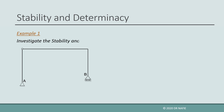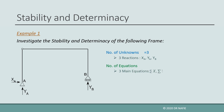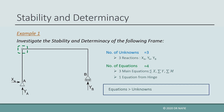Now let us solve some examples. The shown frame has two supports: one hinged support with two reactions and one roller support with one reaction, so the total number of reactions is 3. Because there are no closed frame loops, the number of internal unknowns is 0. Therefore, the total number of unknowns is 3. The total number of equilibrium equations is 4 — the three main equations plus one equation from the intermediate hinge. Because the number of equilibrium equations is larger than the number of unknowns, the structure is unstable.